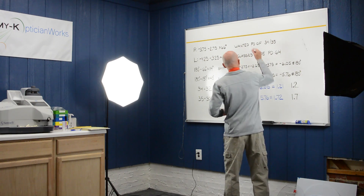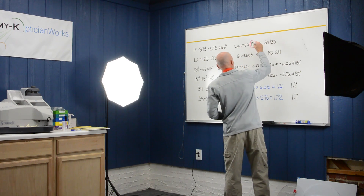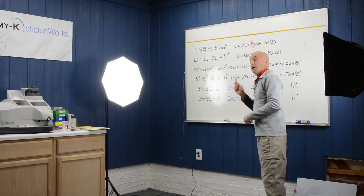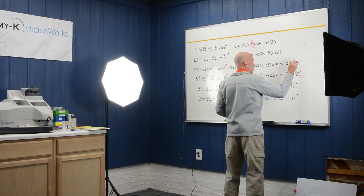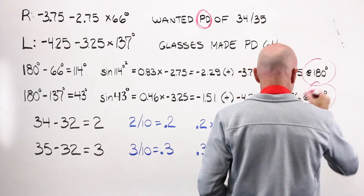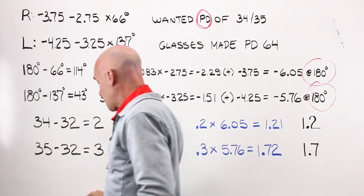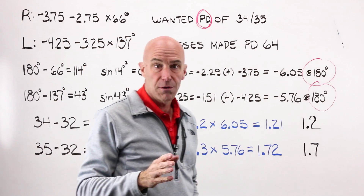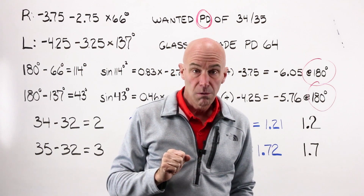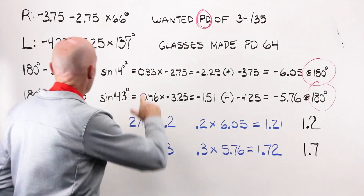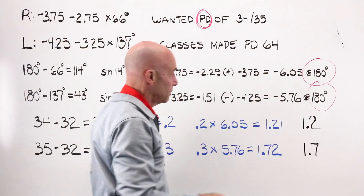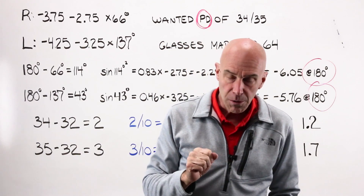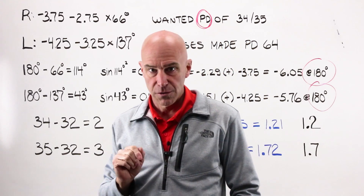My PD, by now to you, should be ringing some bells and whistles, and you should be saying: PD — I need the power at 180. In order to get there, this does not fall neatly into our 30, 45, 60 rule, or any percent rule for that matter. If I do flat transposition, it certainly doesn't get me to 180 degrees. So we're going to use the power in oblique meridians formula.